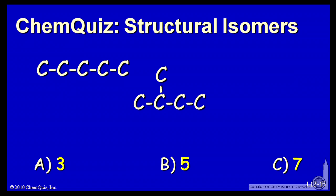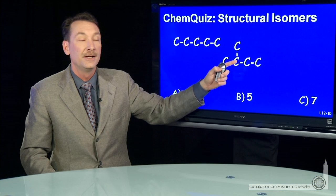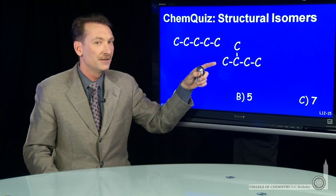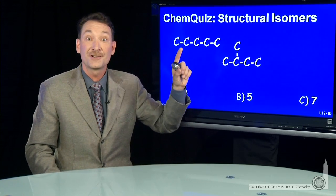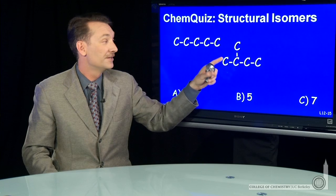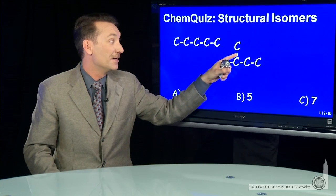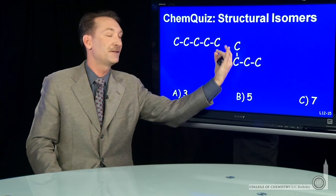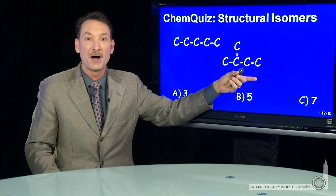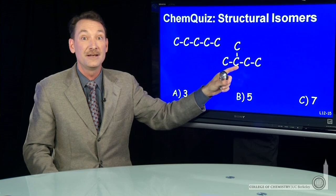Another way to do it would be to have a branch in the chain. Now, if this branch is here or here, that's actually the same molecule. So what you have, if I move this carbon over here but I flip the whole molecule over, it's the same molecule. So those are not two unique isomers.